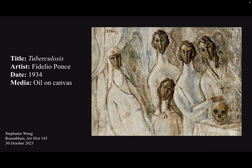Throughout his life, Ponce battled with poverty, alcoholism, and illness. The painting Tuberculosis was made in 1934 when Ponce was sick with a case of his recurring tuberculosis. The media is oil paints on canvas. The piece is from the perspective of the sickly patient, the artist Ponce himself. Ponce battled with tuberculosis for many years and it eventually took his life in 1949.